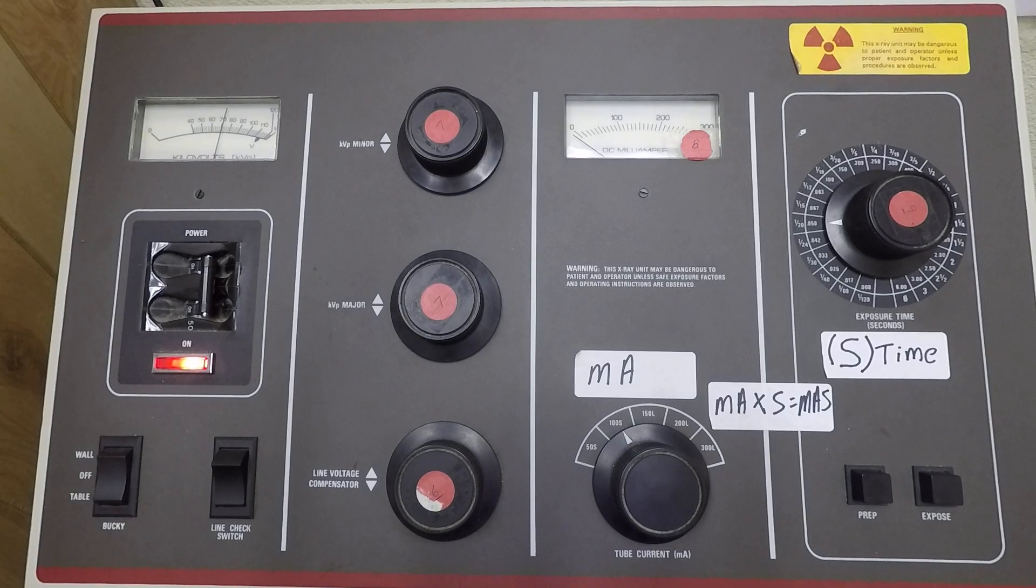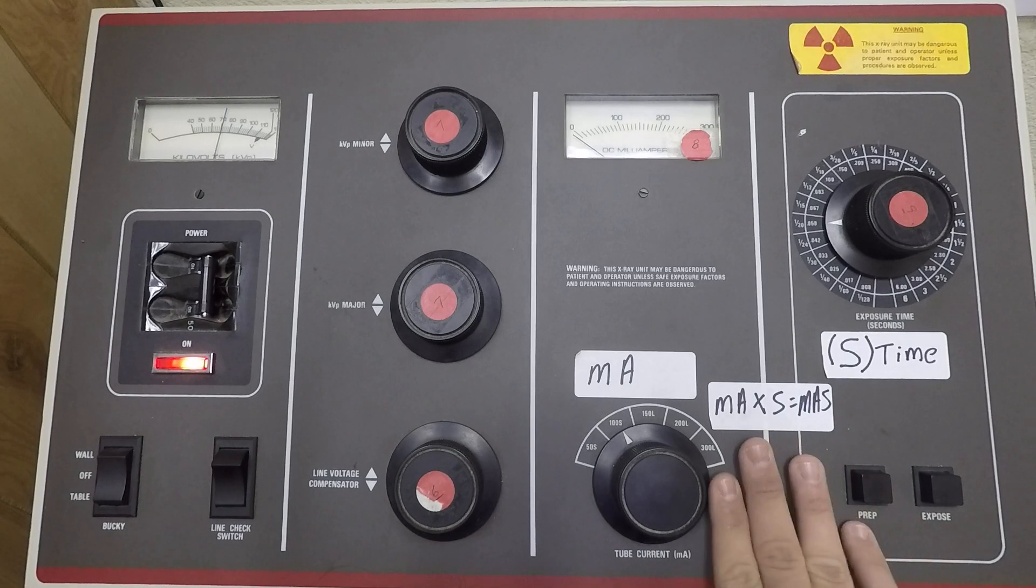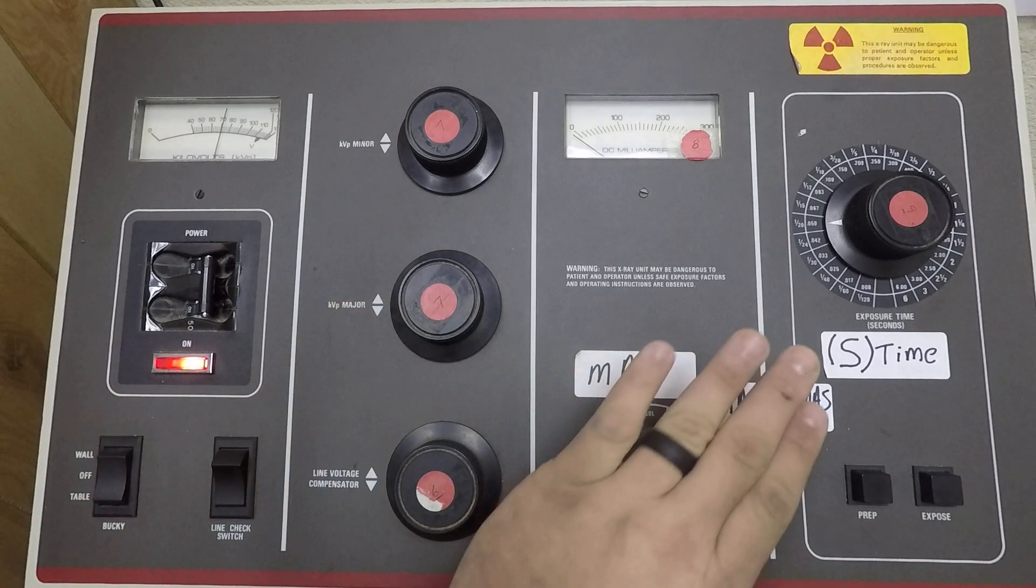So if you want to double your technique on a patient who is thicker than the previous patient by roughly four centimeters, then you would either double your mass or go up 15 percent in your KV. Now the way this works is if you double mass, as I said, you double your patient's exposure, and that doubles technique.